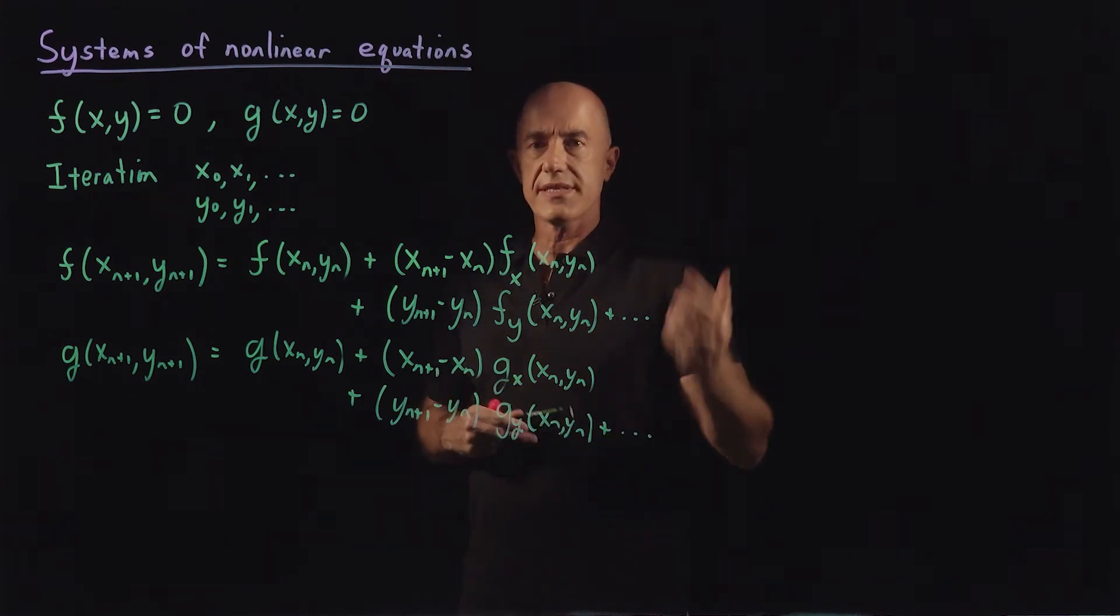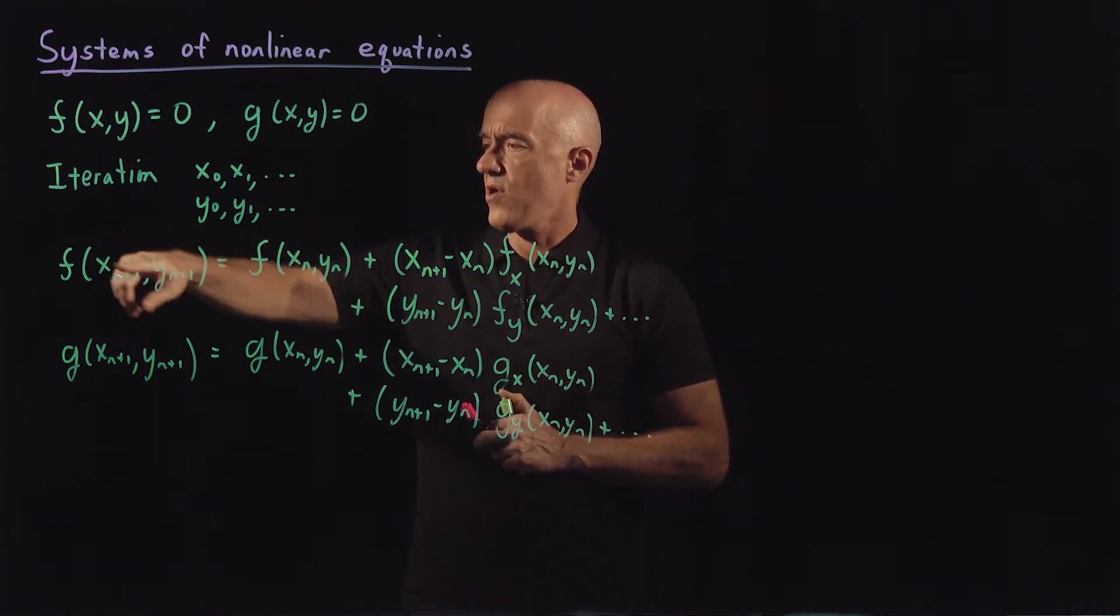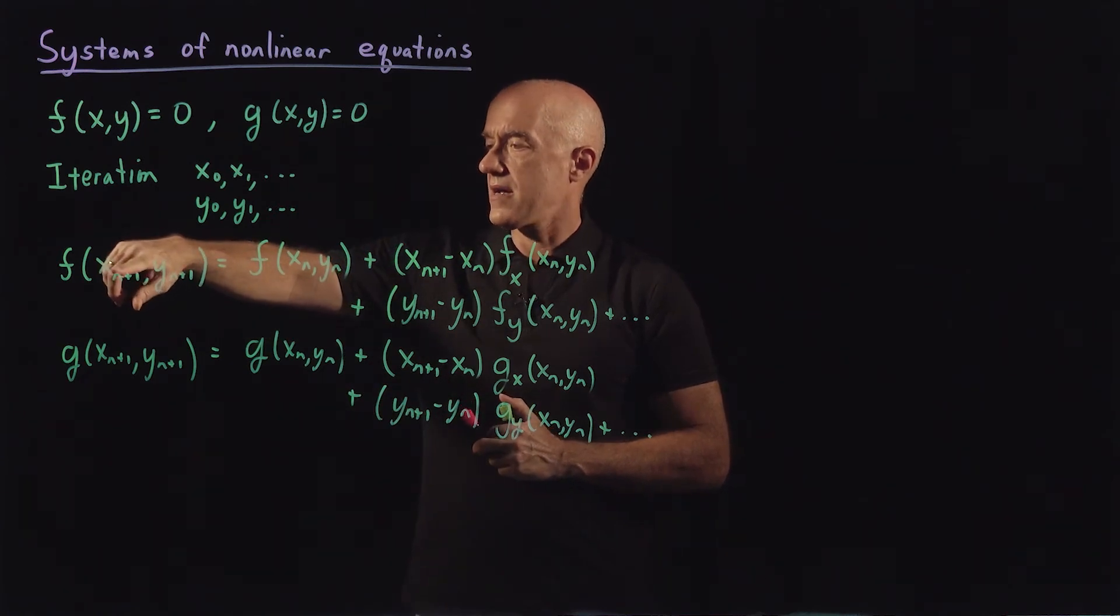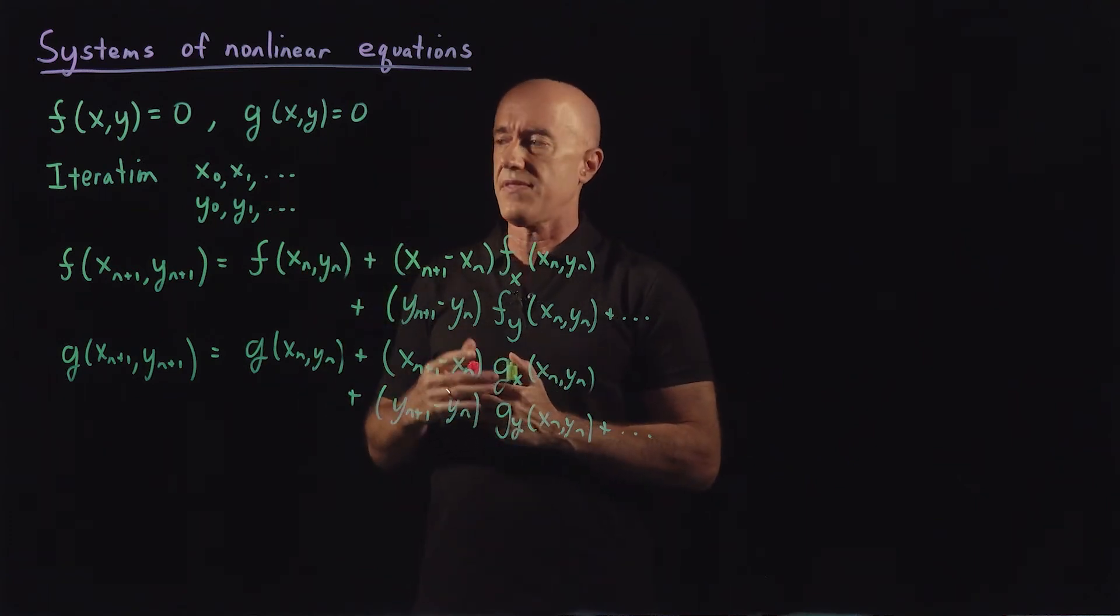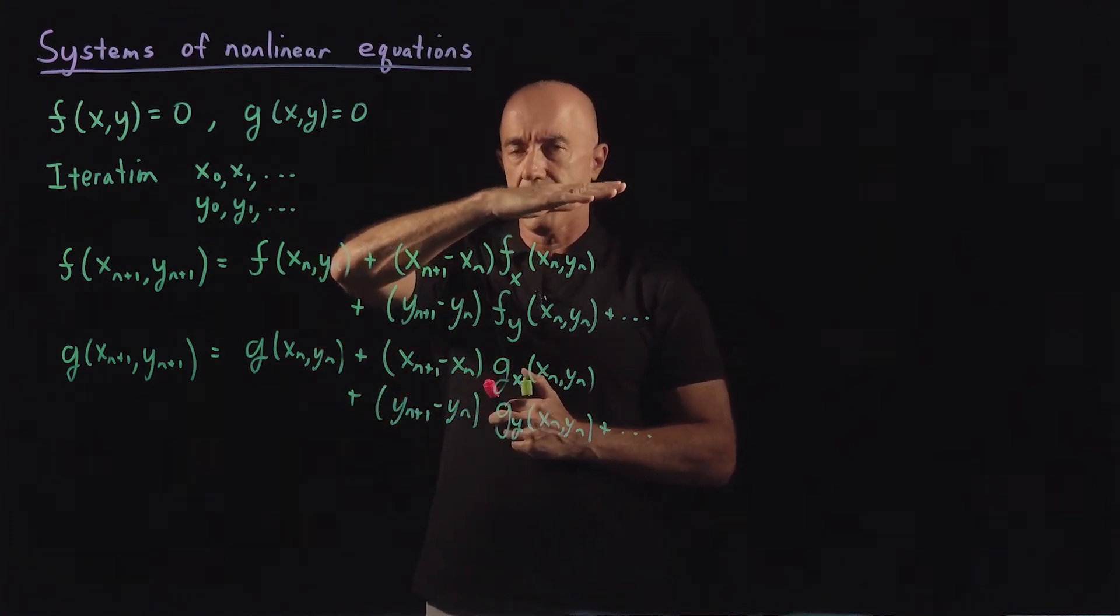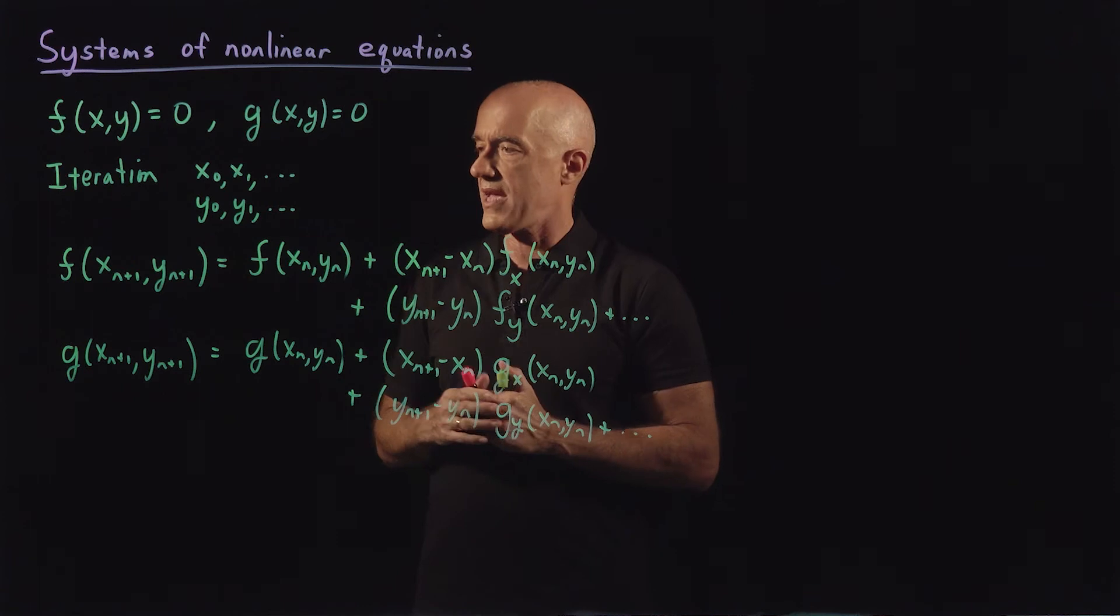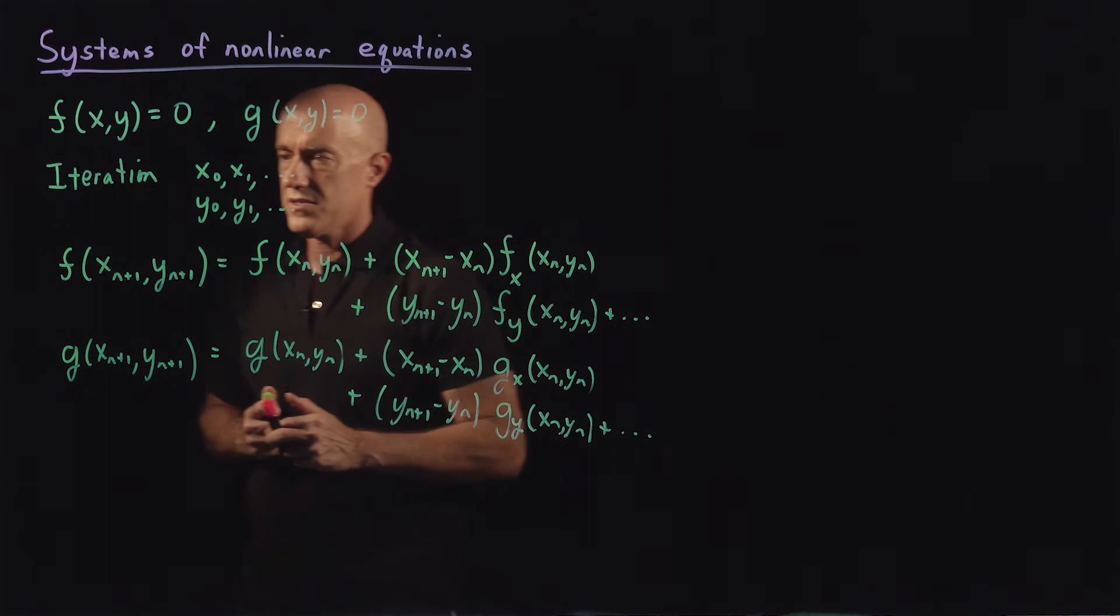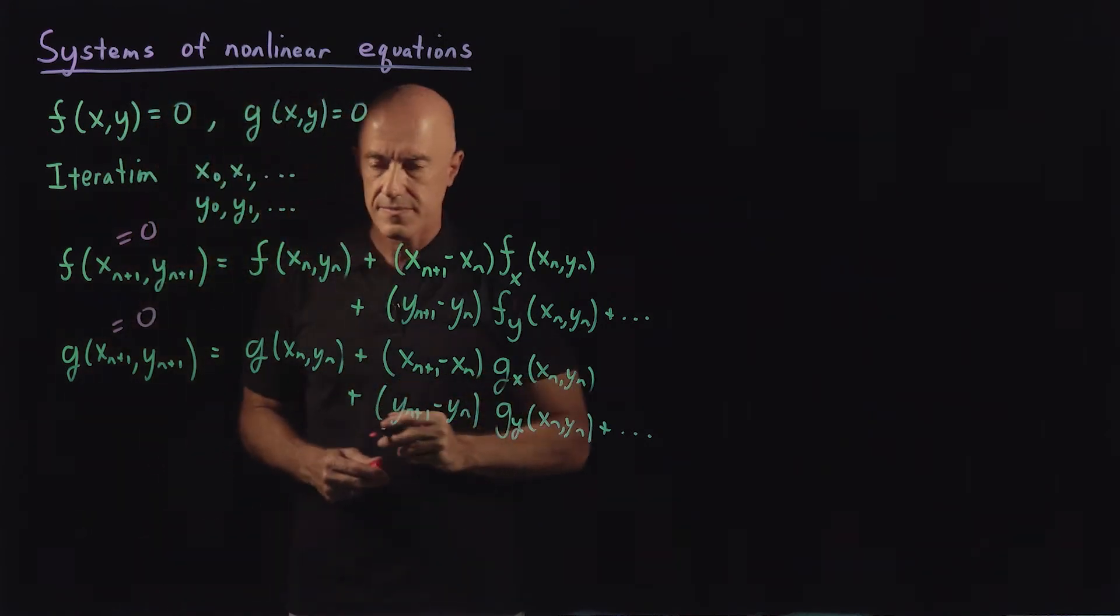We're doing this Taylor series expansion. The goal is to find the value of x and y where f will be 0. So we would like x n plus 1 and y n plus 1 to satisfy f at those values equals 0. If you remember Newton's method, this is approximating the function by a straight line and looking for the x intercept in the single variable case. So now we're setting these two equal to 0. This gets set equal to 0, and this one gets set equal to 0.